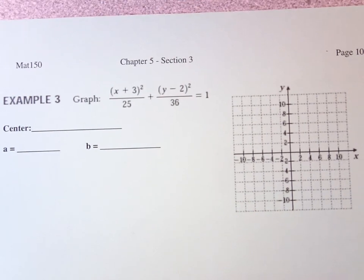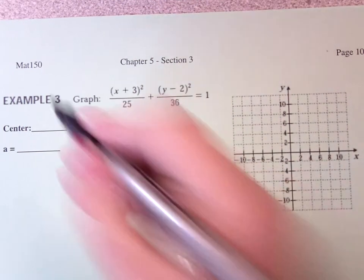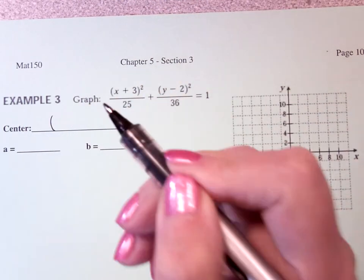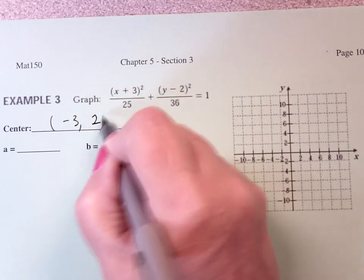If you notice that this one is in standard form, so I can read off the center. So what's the center? Negative 3, positive 2.